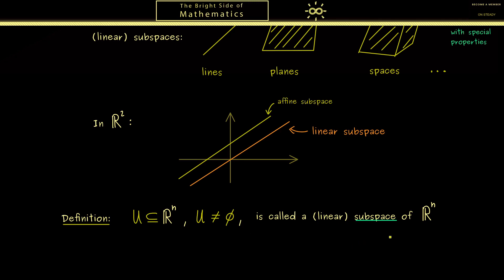Okay, and then we explain in which cases we can call the set U a subspace. Again here please note only sometimes we put the attribute linear in front of subspace if it's not clear what we talk about. Now the idea of a subspace is that we can calculate in U in the same way as we calculate in Rⁿ.